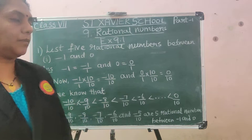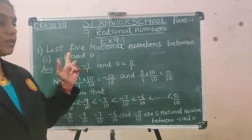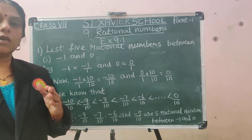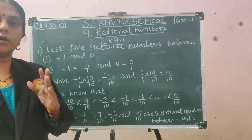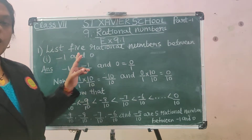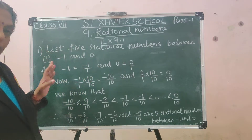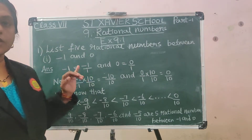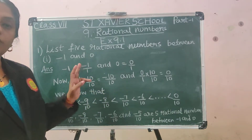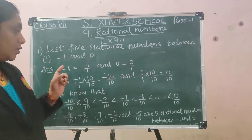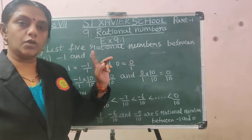Now Exercise 9.1. Question 1: list 5 rational numbers between minus 1 and 0. You already know from integers that 0 is in the center, the left of 0 is negative, and the right is positive. Between minus 1 and 0, we write minus 1 as minus 1 by 1 and 0 as 0 by 1. Any number can be written as a fraction by keeping 1 in the denominator.